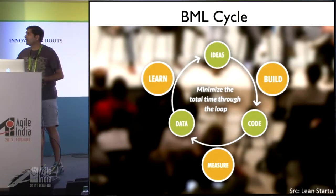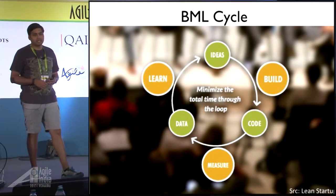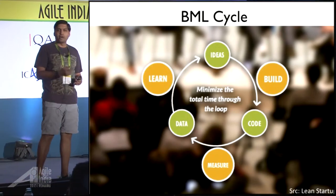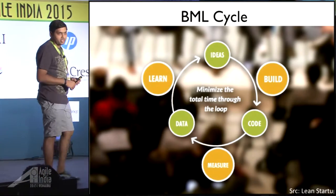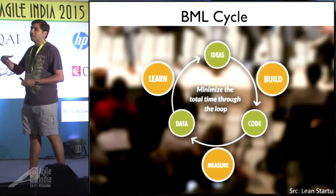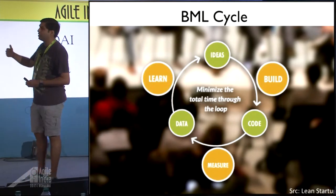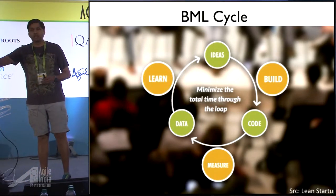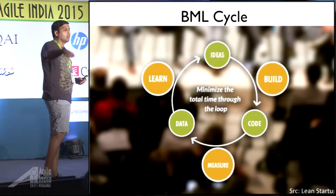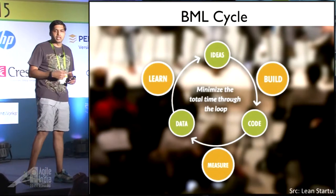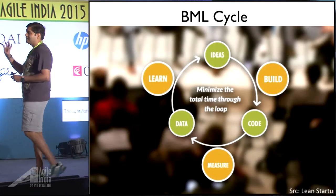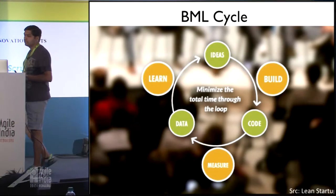Ken Beck came up with an interesting twist on this cycle where he said: instead of going from an idea to code and then to learning, what if you reverse the cycle? You come up with what you want to learn first, then work backwards — if I want to learn this, what data do I need to collect? And if I need to collect this data, what experiments do I need to run to collect it and have some validated learning? That's an interesting twist on the BML cycle, and that's the spirit behind it.